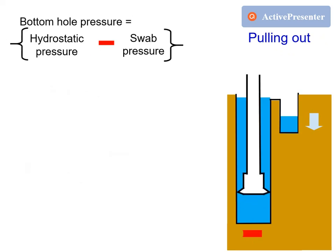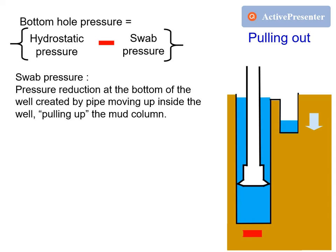Bottom hole pressure while pulling out is hydrostatic pressure minus swab pressure, so the bottom hole pressure is decreasing while pulling the pipe out of hole. Swab pressure is a pressure reduction at the bottom of the well created by pipe moving up inside the well, pulling up the mud column.